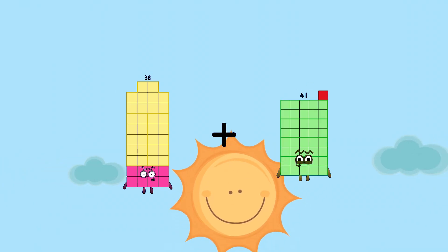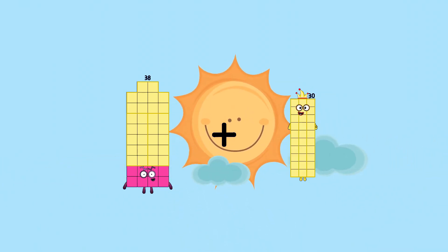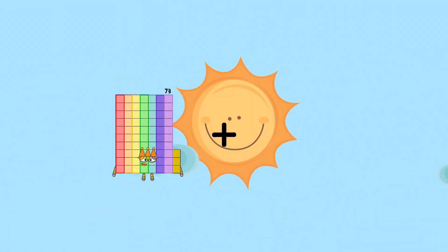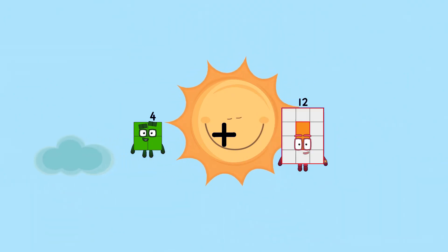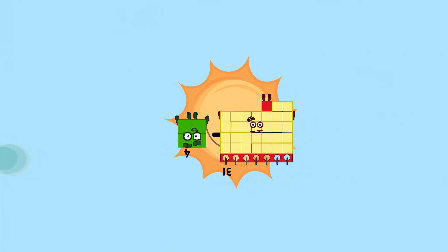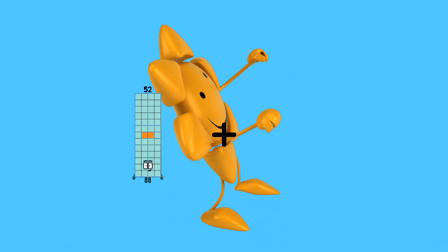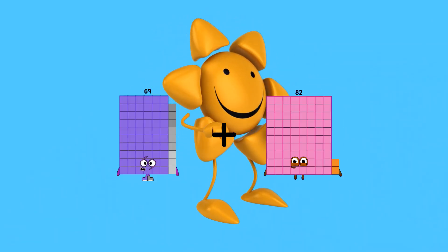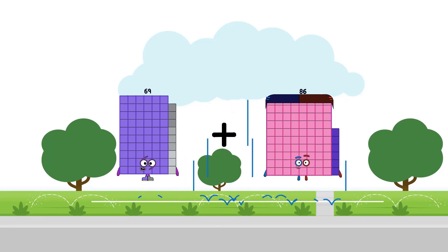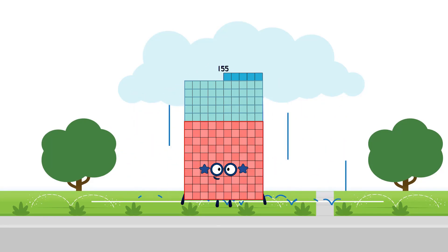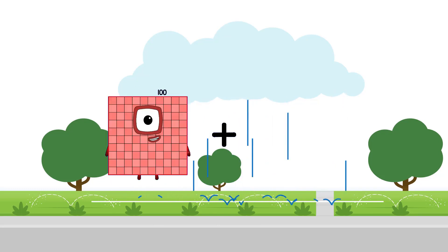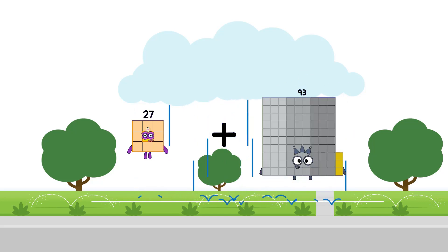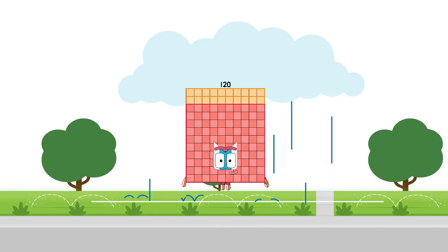38 plus 30 equals 68. 4 plus 31 equals 35. 69 plus 86 equals 155. 27 plus 93 equals 120.